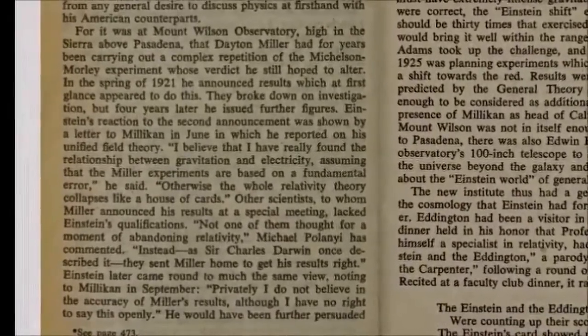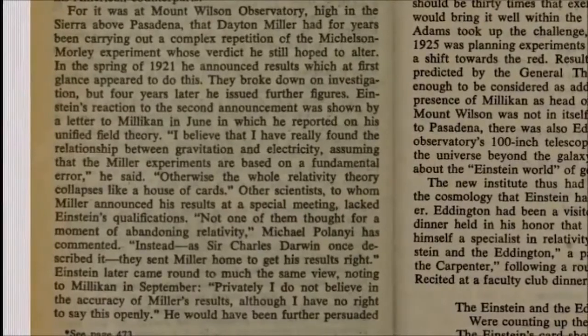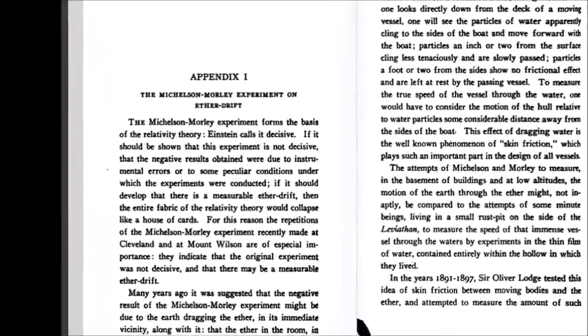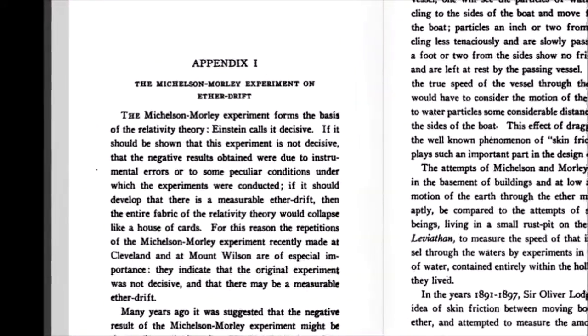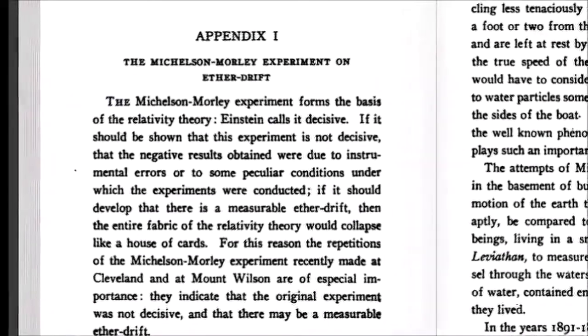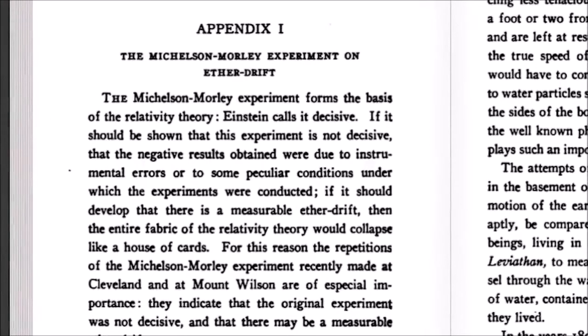Noted physicist Charles Lane Poore of Columbia University reiterated the problem. The Michelson-Morley experiment forms the basis of the relativity theory. Einstein calls it decisive. If it should develop that there is a measurable Aether drift, then the entire fabric of the Relativity theory would collapse like a house of cards.